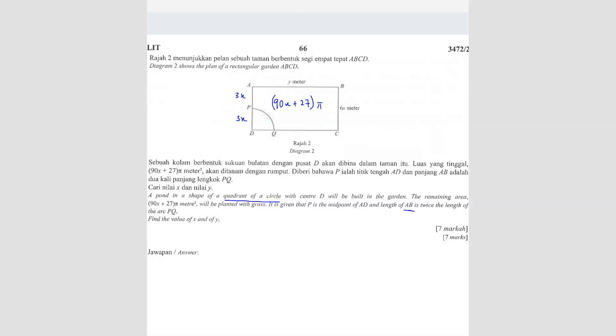The length of AB is twice the length of arc PQ. So we form our equation first, length AB which is y meters, so y equals to 2 times the arc PQ. So we can find our PQ because we know that PQ is one quadrant. So one quadrant means 1 over 4 of 2πR, R is 3X.